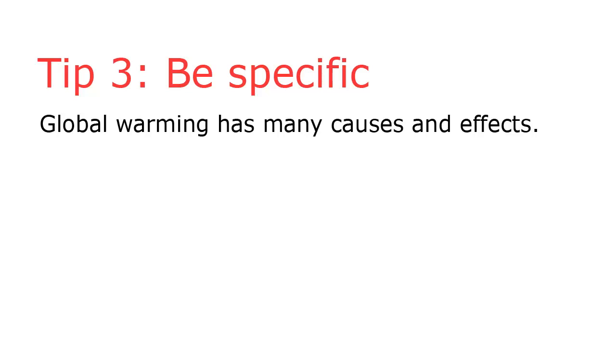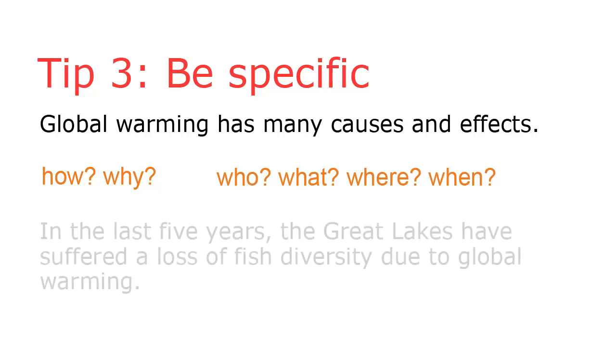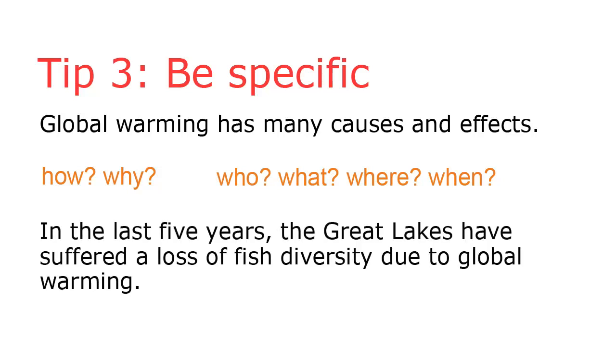One way to tell whether your thesis is specific is to give it the how and why test. Does the thesis give details on how something happens or why it happens? Another way to check is whether it specifies who, what, where, and when it is talking about. This one doesn't answer how or why or have details about what, where, or when. It's much better to state, in the last five years, the Great Lakes have lost fish diversity due to global warming.